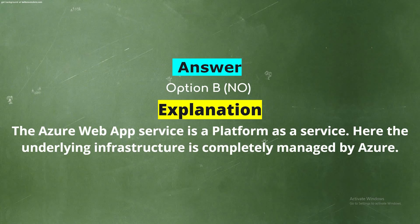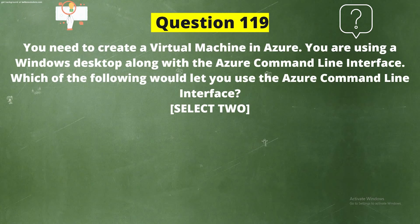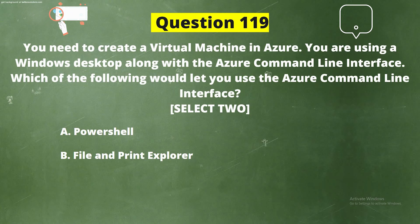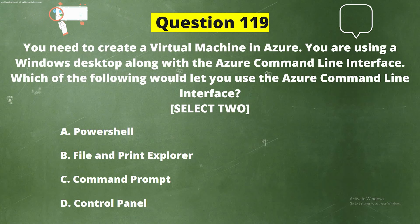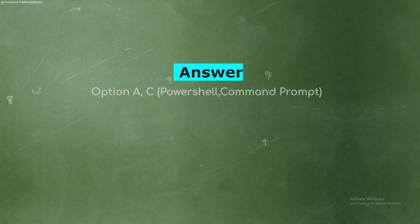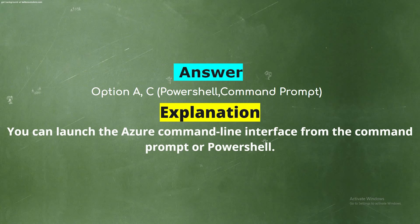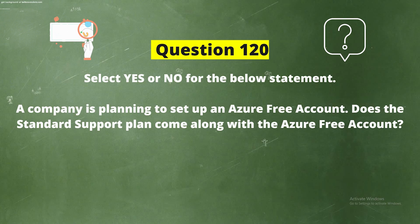Question 119: You need to create a virtual machine in Azure using a Windows desktop with the Azure Command Line Interface. Which of the following would let you use the Azure CLI? Select two options. The correct answers are Option A: PowerShell and Option C: Command Prompt. You can launch the Azure Command Line Interface from either the Command Prompt or PowerShell.